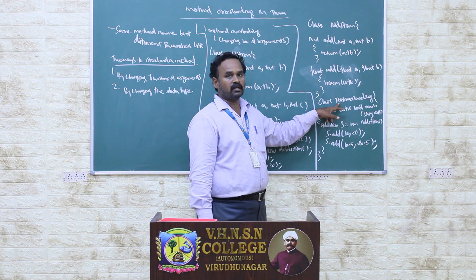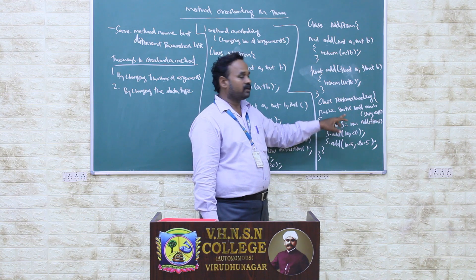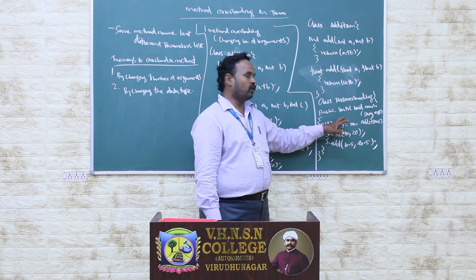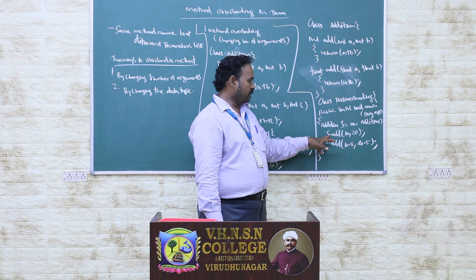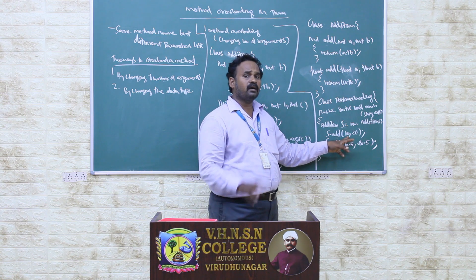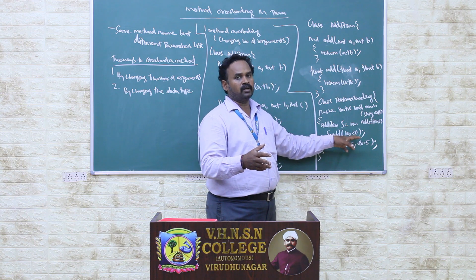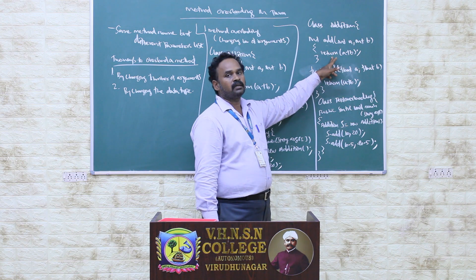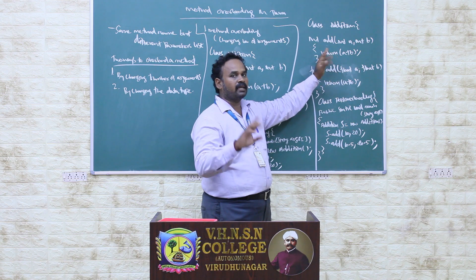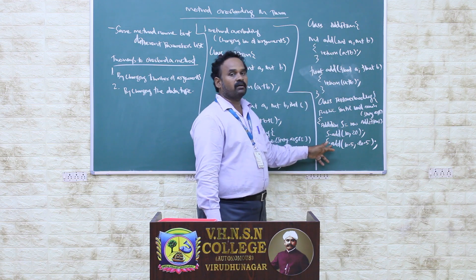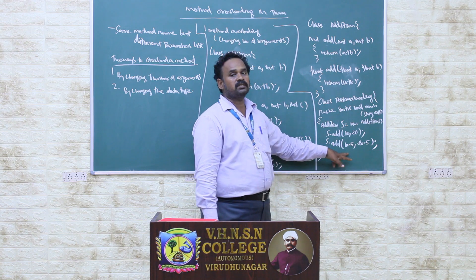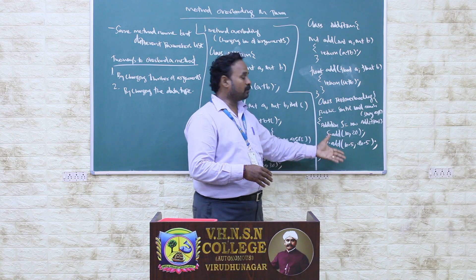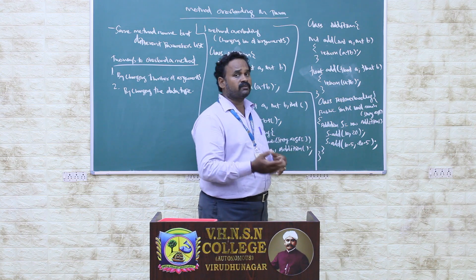Next, we are creating another class with the main method. We are creating an object, and through the object we are calling the add method. First, we are passing integer values 10 and 20. The values are assigned to A and B, so the result is A plus B, which is 30. Next, we are calling the same method name through the object, but this time passing float values 10.5 and 20.5. Based on the parameter values, the corresponding method will be called automatically.